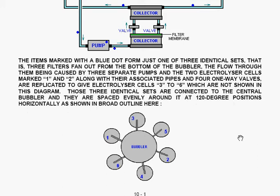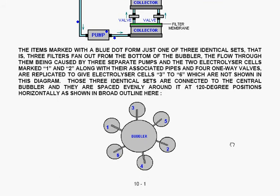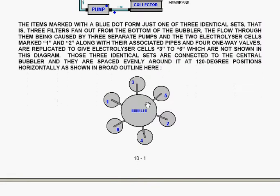Along with their associated pipes and four one way valves, these are replicated to give electrolyzer cells 3, 4, 5 and 6 which aren't shown in the above diagram. Those three identical sets are connected to the central bubbler which is here and quite large.